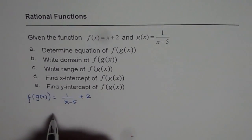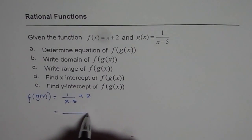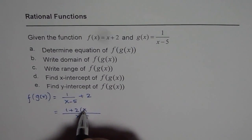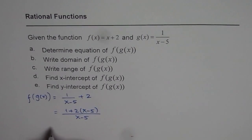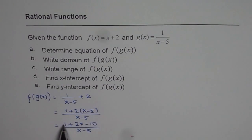Now we can take common denominator which is x minus 5 and the numerator we get 1 plus 2 times x minus 5 and this could be written as 1 plus 2x minus 10 over x minus 5.